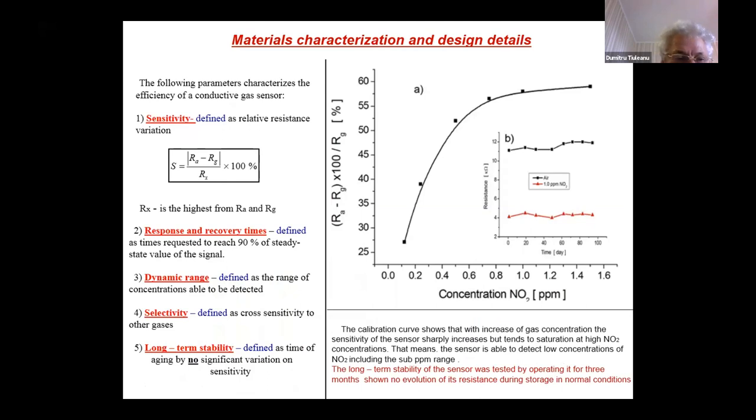Now, sensing characterization. The following parameters were used to characterize this sensor: sensitivity, response recovery times, dynamic range, selectivity, and long-term stability. Here, on this picture, is shown the calibration curve, that means the sensitivity of the sensor versus gas concentration. You can see that at low concentration, the sensitivity increases very sharply with increasing gas concentration.